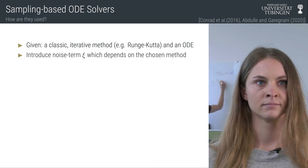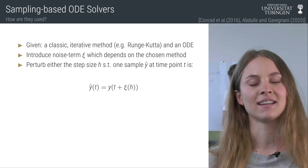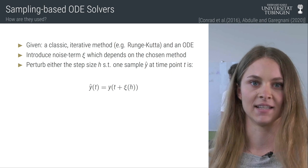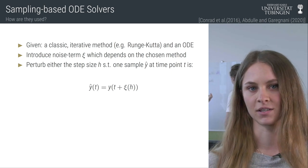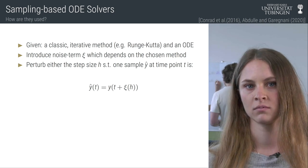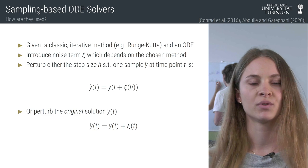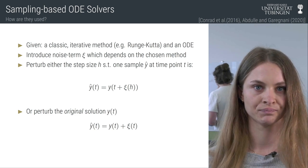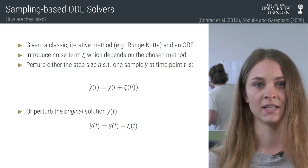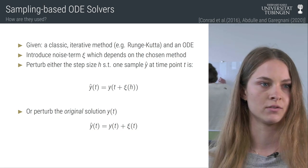How can this be done? Abdulle and Gardignani propose to perturb the step size, so instead of evaluating the ODE at position t, it is evaluated at a slightly shifted position t plus some noise term. Conrad et al. proposed to perturb the original solution, so instead of taking the deterministic solution y, we add some scaled version of the error estimation to the output.